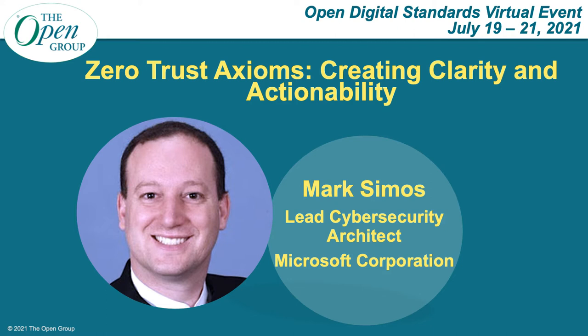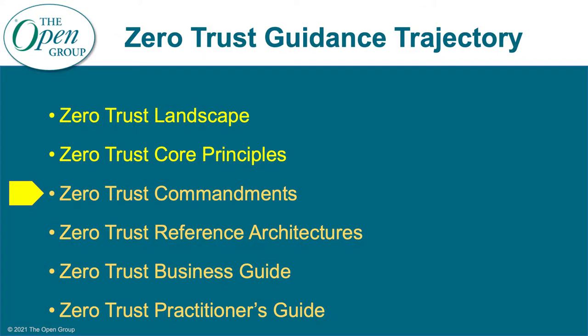Today we're going to be talking about what we're doing within the Open Group on Zero Trust Commandments. This is really part of a series of guidance, first starting with Zero Trust Landscape — an ongoing annual survey and information gathering with publications once a year — and then the core principles, which was the first stage of defining Zero Trust from an Open Group perspective, leveraging knowledge from the members and laying out these principles, which we did map quite closely to the original Zero Trust Commandments, which has influenced our current work.